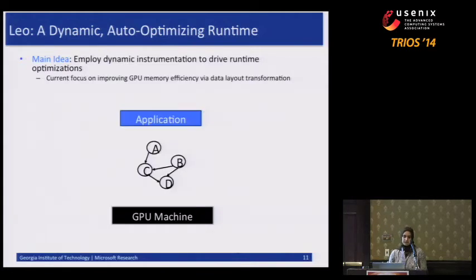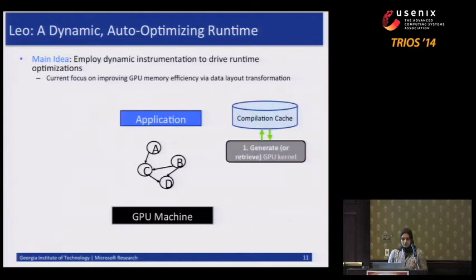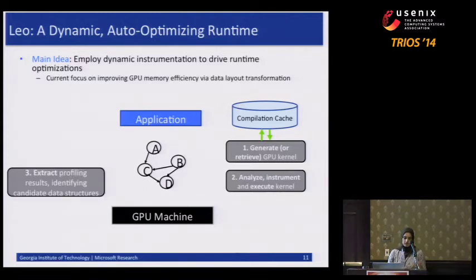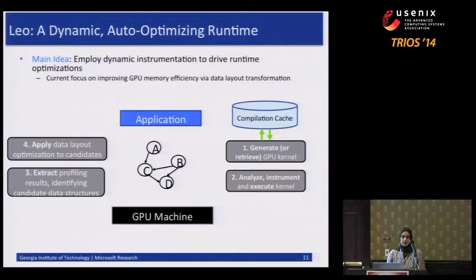At a high level, an application can be considered as consisting of several GPU functions constructed as a data flow graph. We generate the GPU kernel using our compilation framework, or retrieve it if already generated. Then we analyze, instrument, and execute the kernel on the GPU backend. We get the instrumentation and profiling results, identify which data structures to optimize using taint analysis, and then apply the optimization to those candidates.